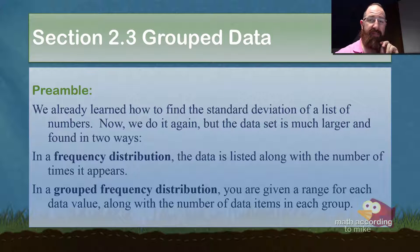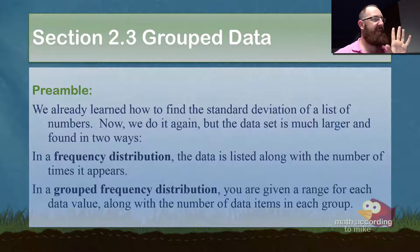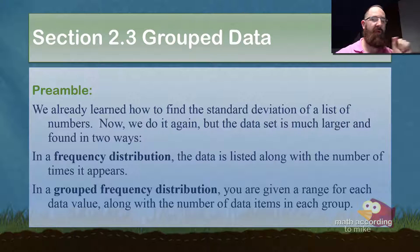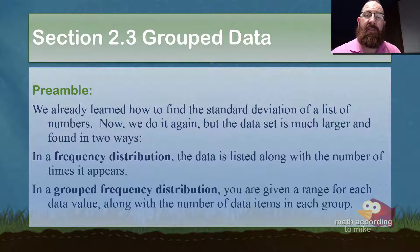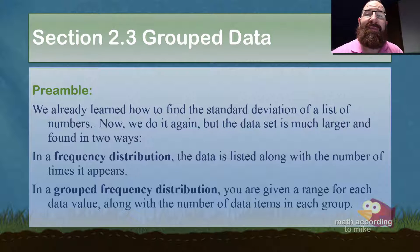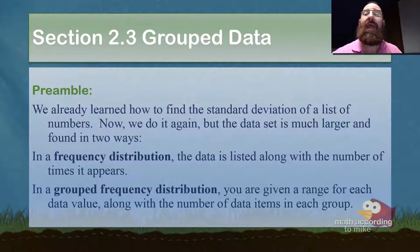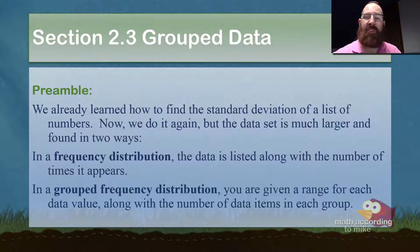We're going to have two varieties. We're going to have ones where they'll make a table that says the number 5 appears 8 times, the number 6 appears 12 times, and so on. That will be called a frequency distribution — in a frequency distribution, the data is listed along with the number of times it appears. The other variety is a grouped frequency distribution, where you are given a range for each data value, along with a number of items in each group.